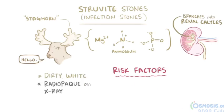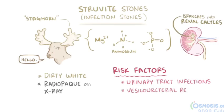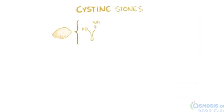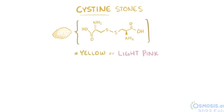Risk factors include urinary tract infections as well as vesicoureteral reflux and obstructive uropathies, both of which are also risk factors for urinary tract infections. A tiny minority of stones are cysteine stones, composed of the amino acid cysteine which sometimes leaks into the urine to crystallize and form a yellow or light pink colored stone that's also radio-opaque under x-ray.